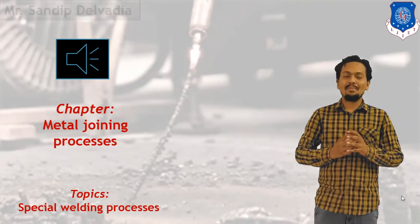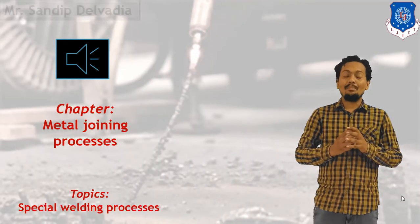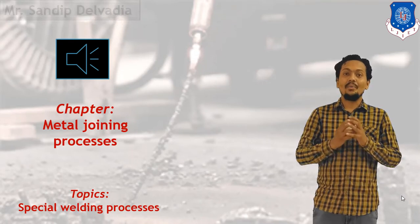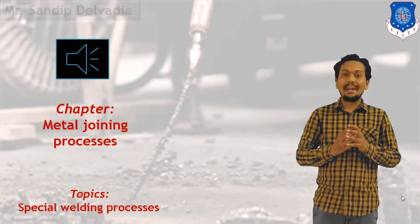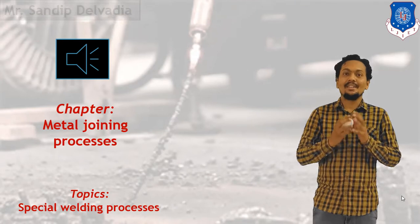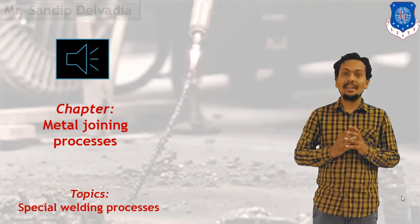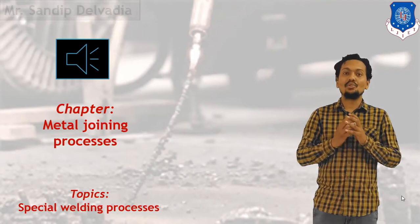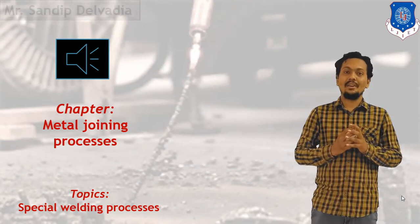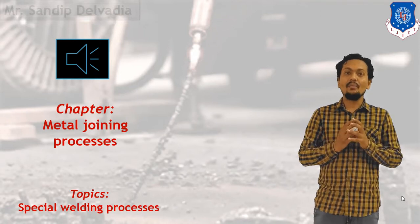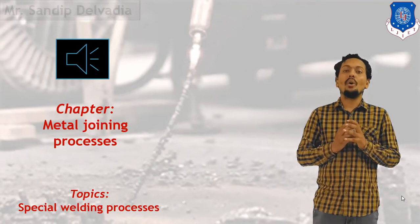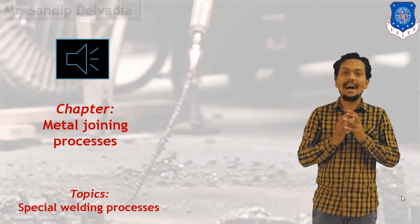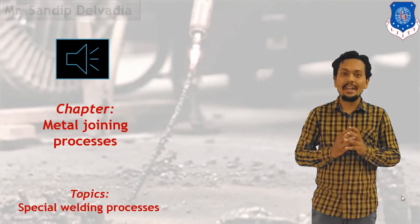Hello students, I am Mr. Sandeep here. In manufacturing technology we have been going through metal joining processes. Let us start our discussion in the chapter on metal joining processes, and today our topic is special welding processes. In welding we have been going through different processes like resistance welding, arc welding, gas welding, etc.